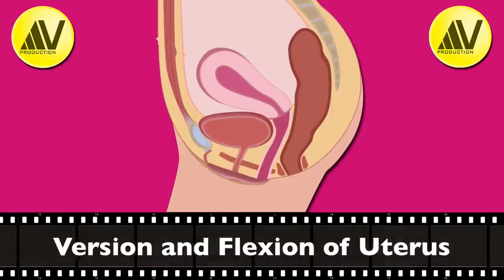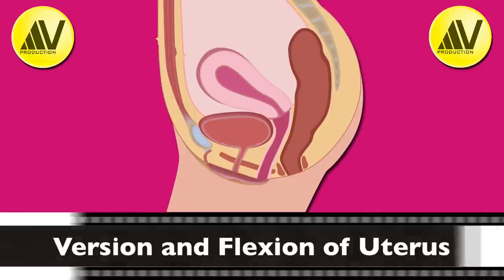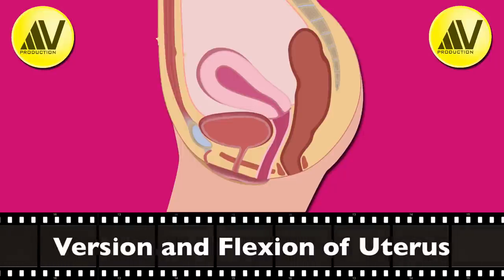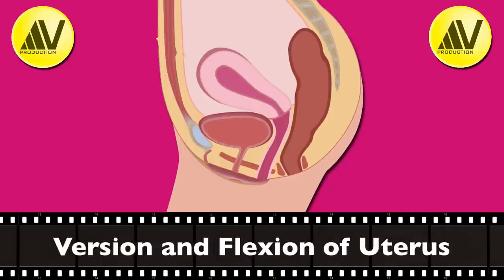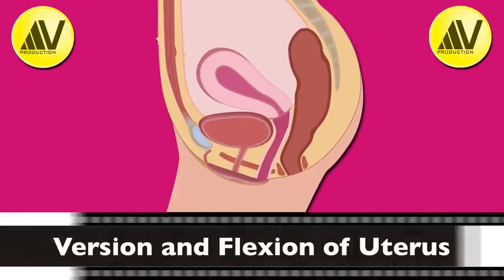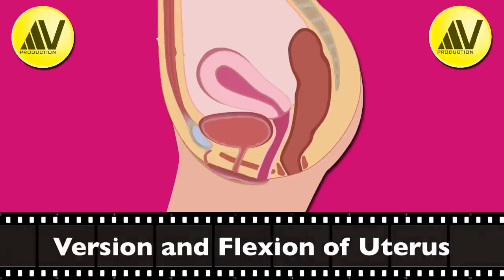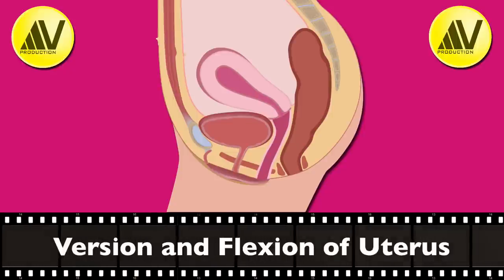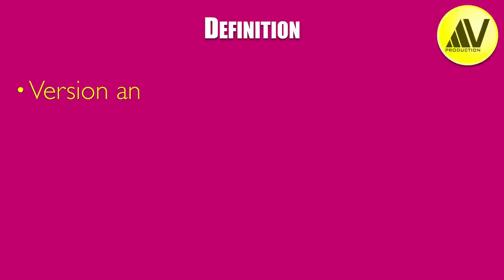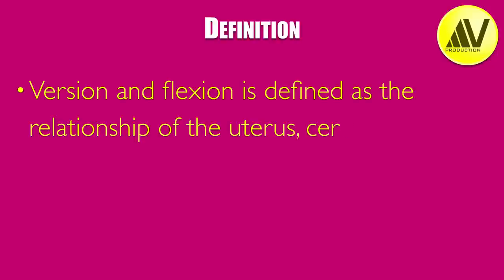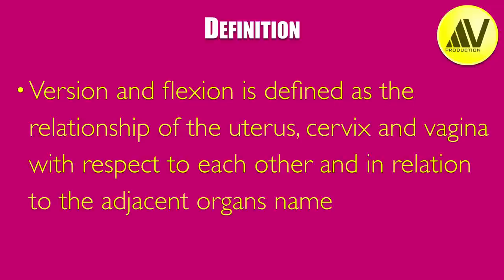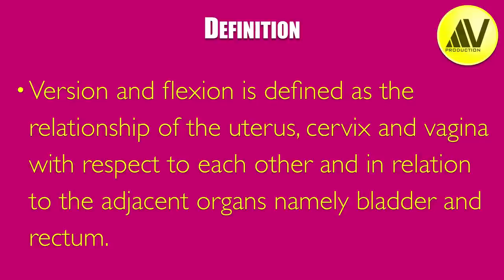cervix and vagina. Unfortunately, most students of obstetrics and gynecology are not taught this, or if they are taught, they are taught wrong concepts. So I am going to, once for all, clear the concepts of what is version and flexion and its applied anatomy. My definition of version and flexion is the relationship of the uterus, cervix and vagina with respect to each other and in relation to the adjacent organs like bladder and rectum.